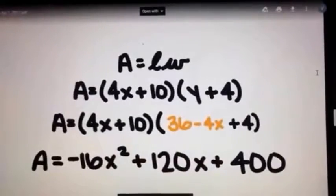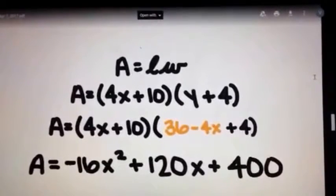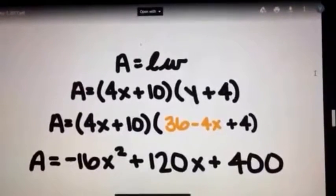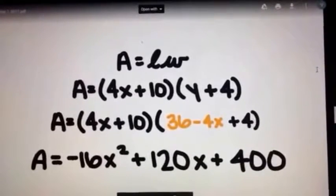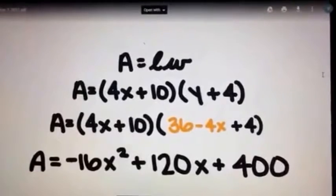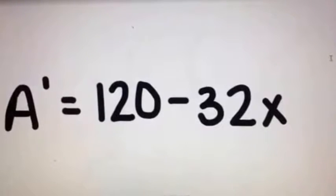Using this, she plugged it into the area equation because she now knows both length and width. She found that the area equation was negative 16X squared plus 120X plus 400 and then she took the derivative of that and came up with A prime is equal to 120 minus 32X.